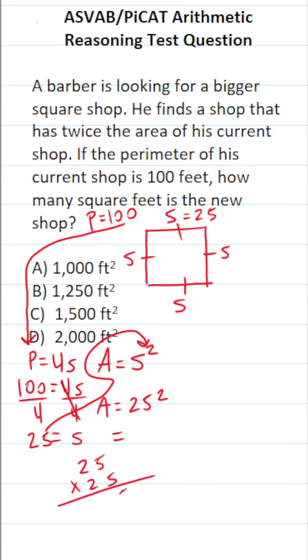We have 25 times 25. 5 times 5 is 25, carry a 2. 5 times 2 is 10, plus 2 is 12. Add a 0 placeholder before we start multiplication with this 2. 5 times 2 is 10, carry a 1. 2 times 2 is 4, plus 1 is 5. So this is going to be 625.